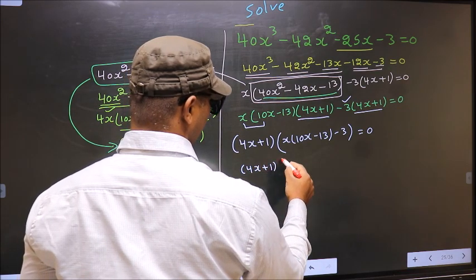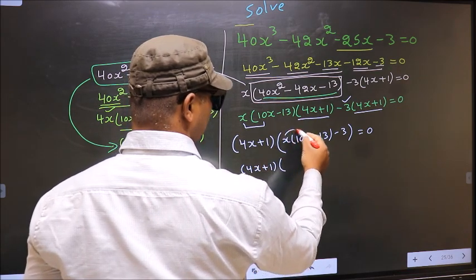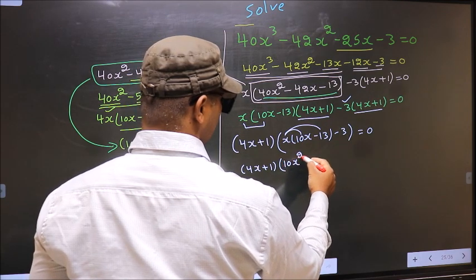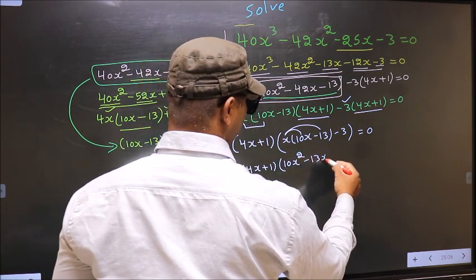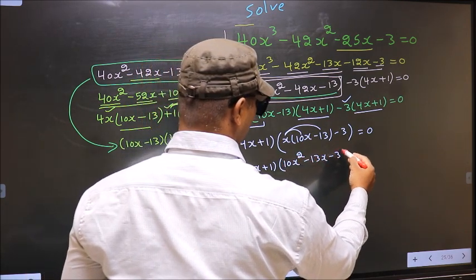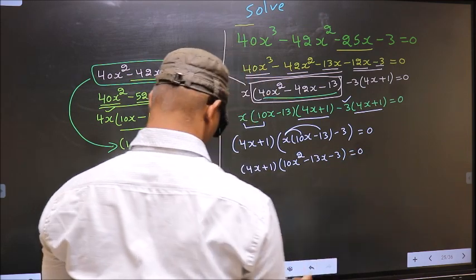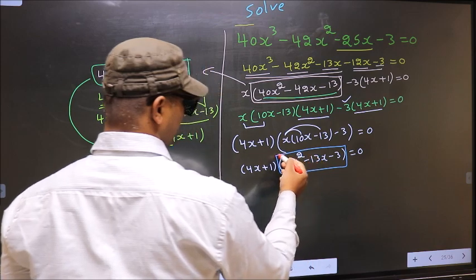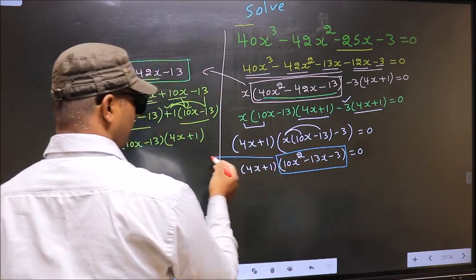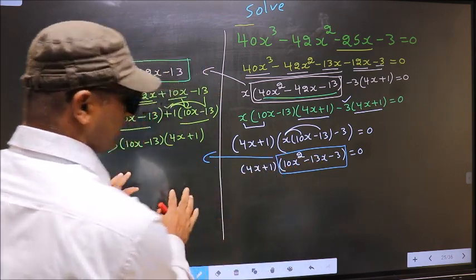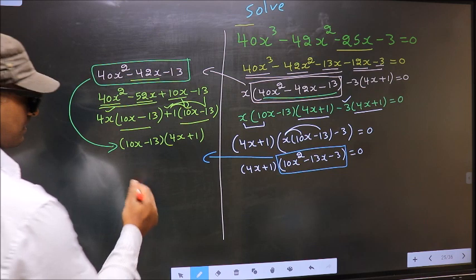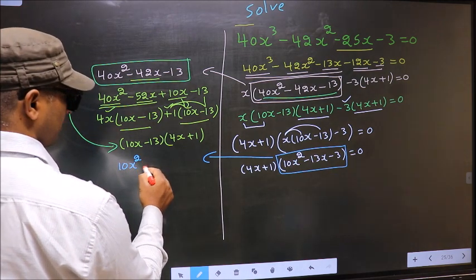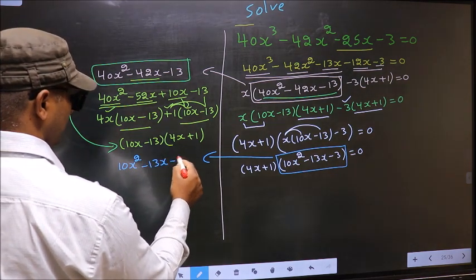Now, 4x plus 1 — you open up the brackets in this way. You get 10x² minus 13x minus 3 equal to 0. Now we got a quadratic, so I will factorize this quadratic here. That is 10x² minus 13x minus 3.